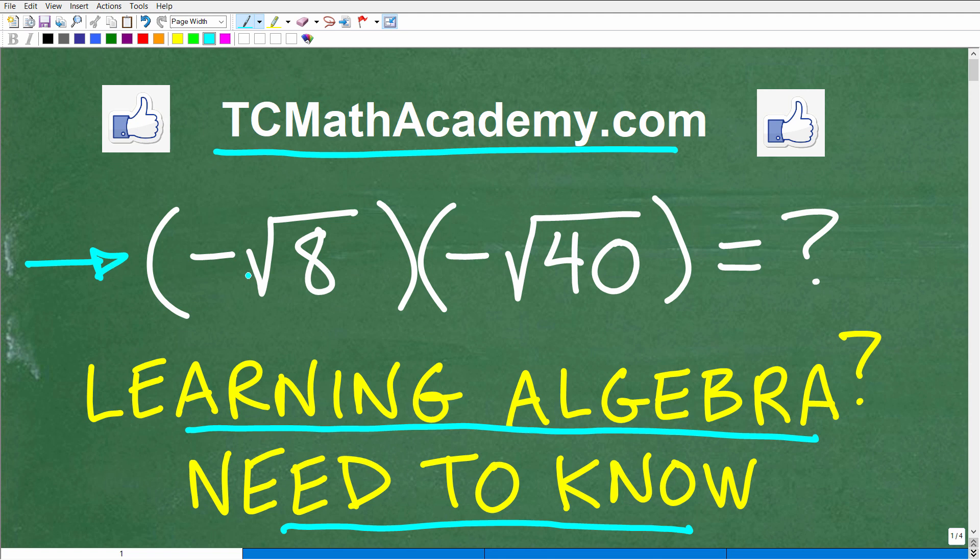So we have a negative square root times another negative square root. How do we simplify this? That's exactly what I'm going to cover here in just one second. But if you know how to do this problem, go ahead and put your answer into the comment section. I'm going to show you the correct answer in just one second, and then I'm going to fully explain exactly how to solve this problem and what you really need to know to master this in algebra.